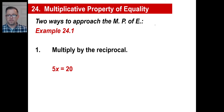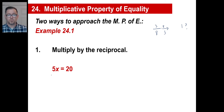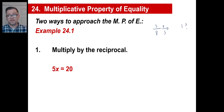If you have something like 3 eighths, how do you turn this into a 1? What do you need to multiply 3 eighths by to turn it into a 1? You need to multiply by the reciprocal — 8 over 3 — because 24 divided by 24 is 1. Anytime you want to turn one of these numbers into a 1, you multiply by the reciprocal. That's how you solve equations — you turn the coefficient into 1.